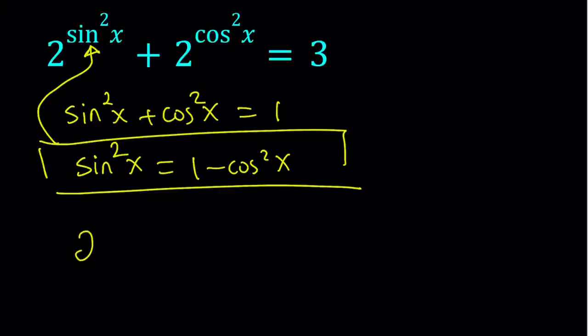So we get 2 to the power 1 minus cosine squared x plus 2 to the power cosine squared x equals 3. Obviously, similarly, you could also isolate cosine squared and replace it with 1 minus sine squared. And it would give you pretty much the same thing. You would get the exact same solutions, but you would be solving a sine equation as opposed to cosine equation. That would be the only difference.